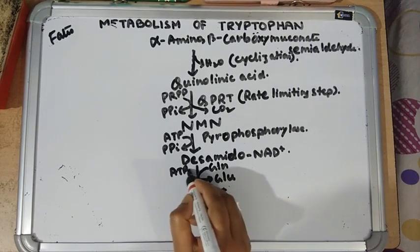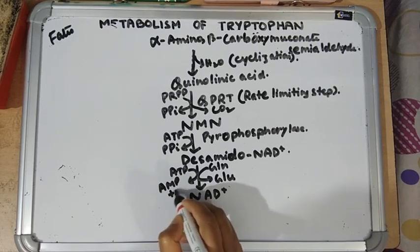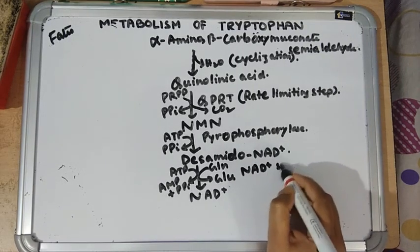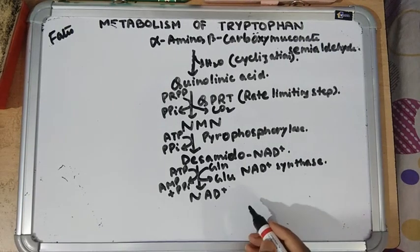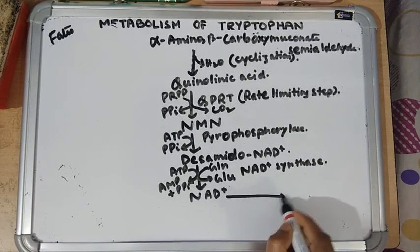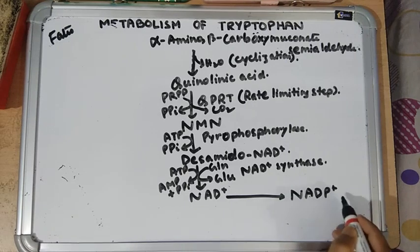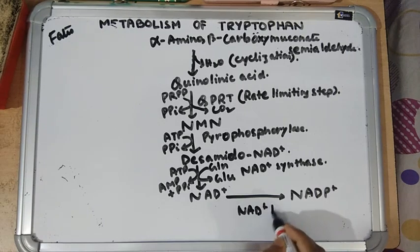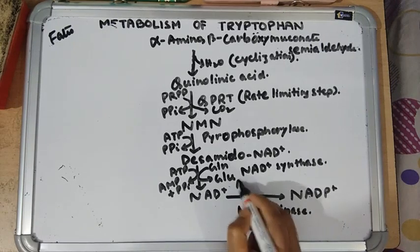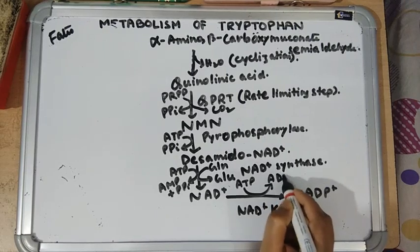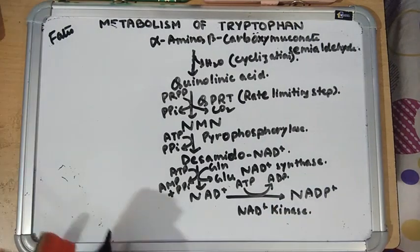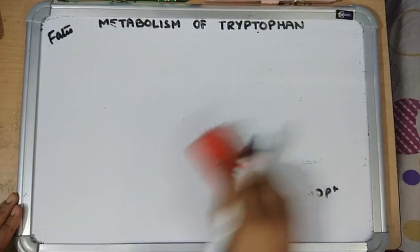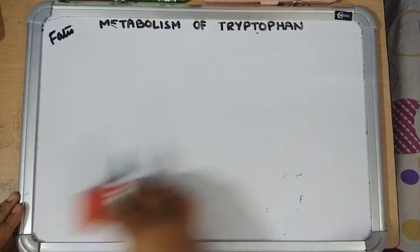Desamido-NAD takes up the amide group from glutamine to form NAD. ATP is required, converted into AMP and inorganic pyrophosphate. This enzyme is known as NAD synthase. From NAD, we can get NADP by phosphorylation via NAD kinase, with ATP as phosphate donor. This is how niacin, NAD, and NADP are synthesized from tryptophan.